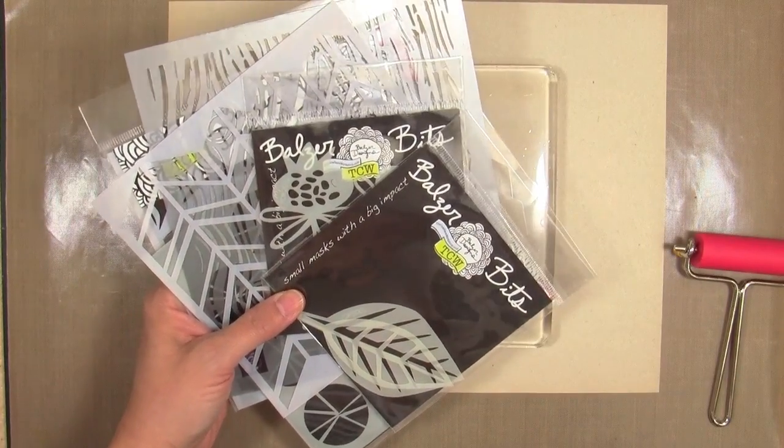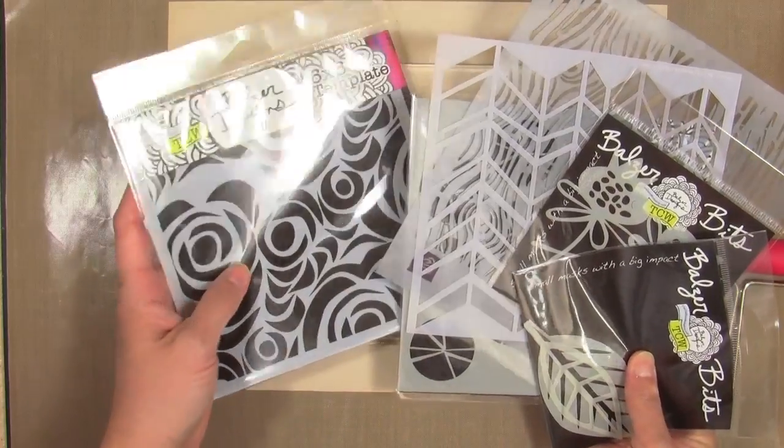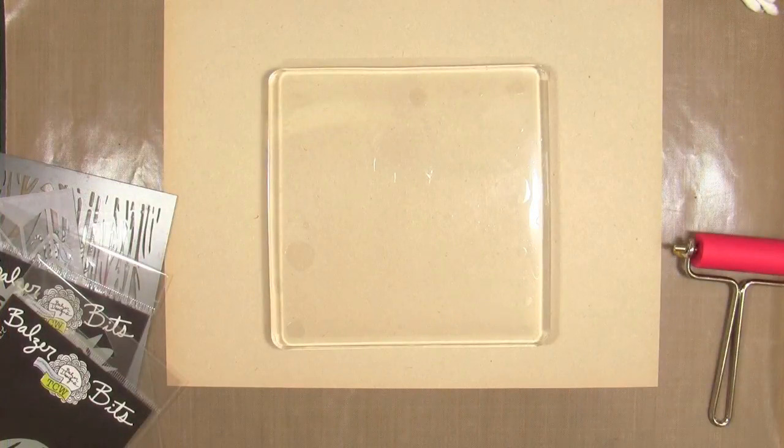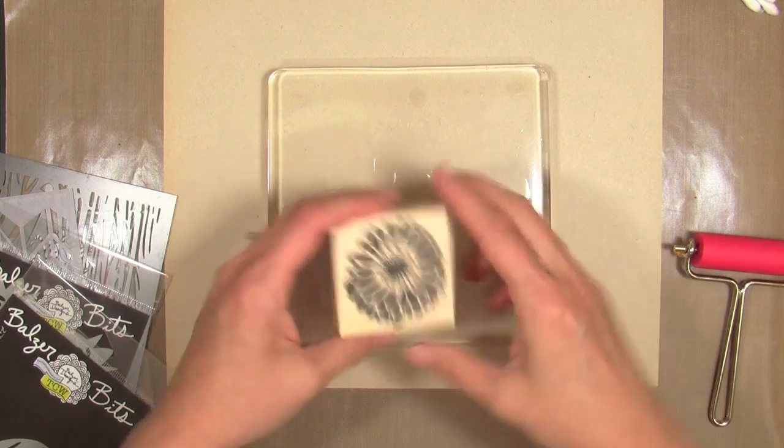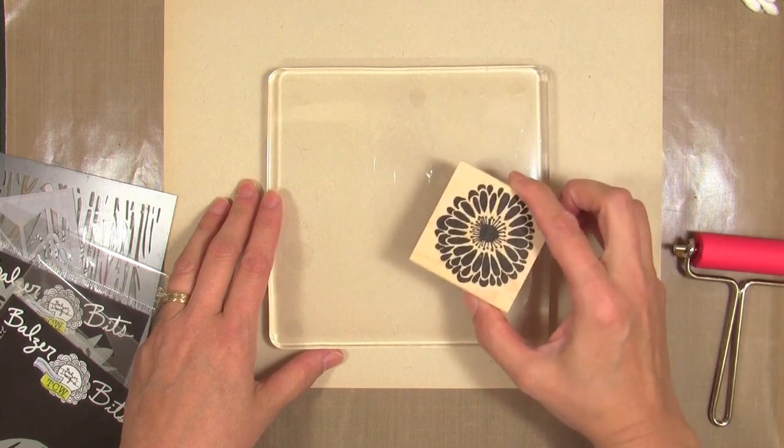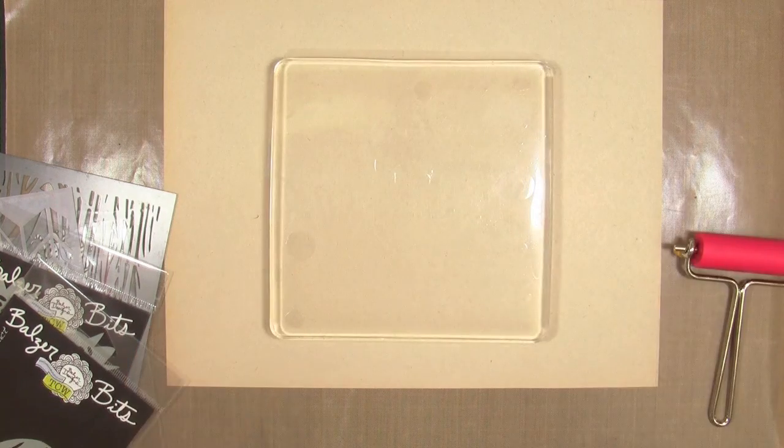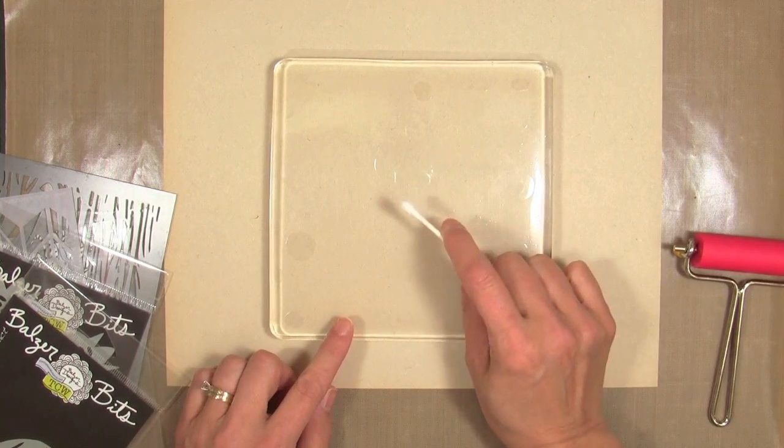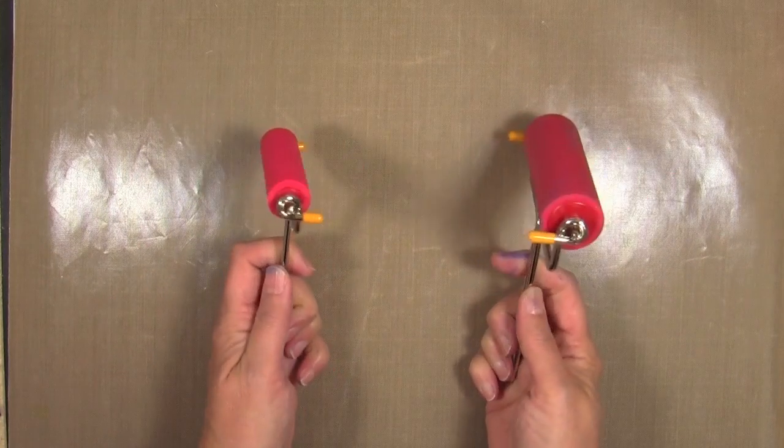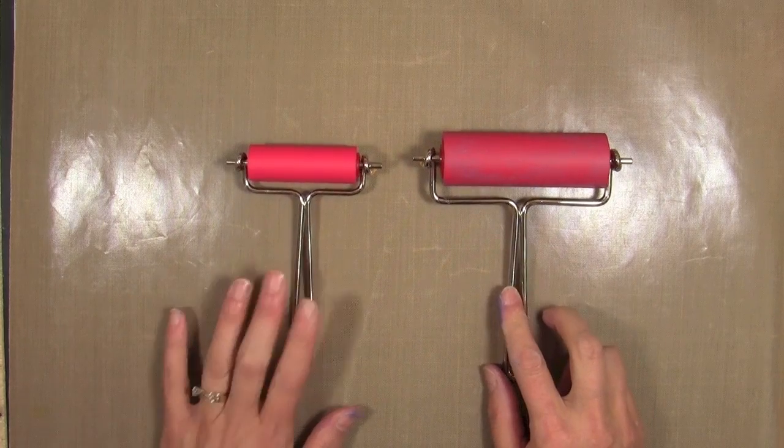Now, to add texture and pattern, we can use stencils and I've got quite a variety here. You can use stamps. You can actually stamp into the paint and remove the paint, so I found that bold images worked really well. You can also draw patterns and designs using a Q-tip or a soft brush, but you don't want to use anything hard or sharp because it'll ruin the surface. To apply the paint, we're gonna need some rubber brayers.